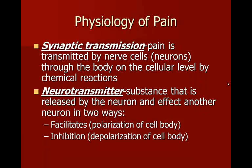Synaptic transmission: pain is transmitted by nerve cells through the body on the cellular level by chemical reactions. The way these chemical reactions are transmitted is through a neurotransmitter — a substance released by the neuron that affects another neuron in two ways. It either facilitates or polarizes the cell, activating it and making it excitable, or it inhibits and depolarizes the cell.